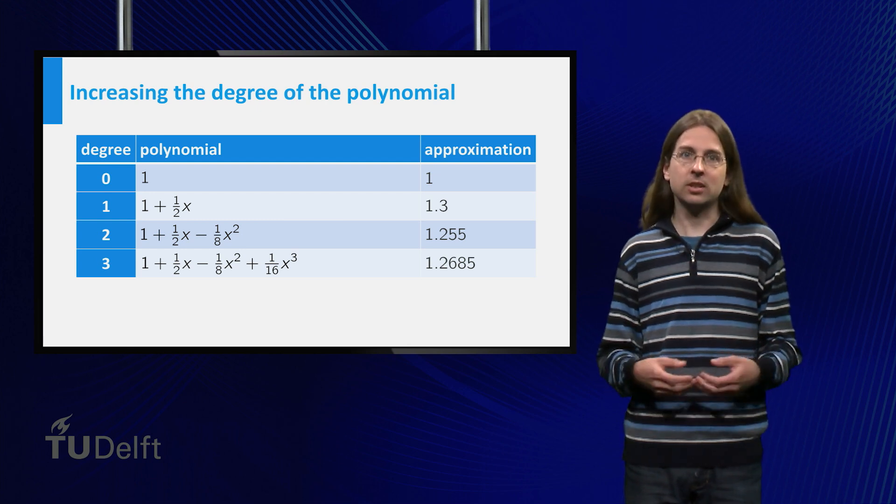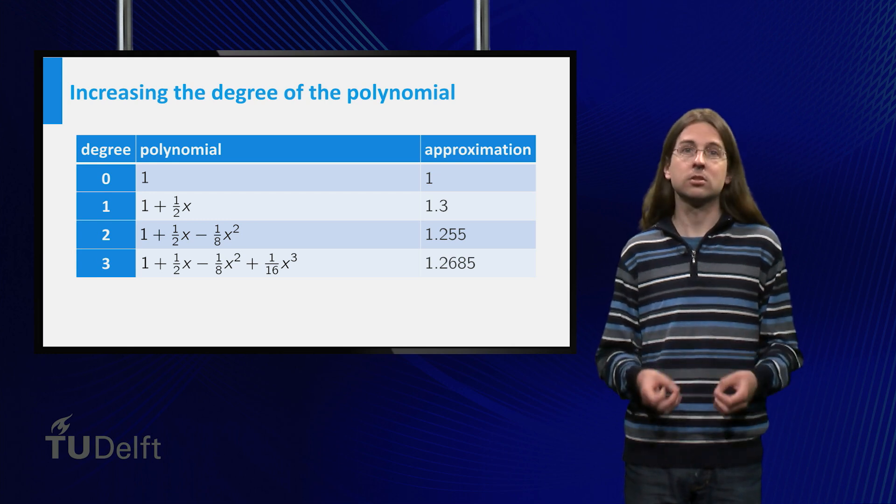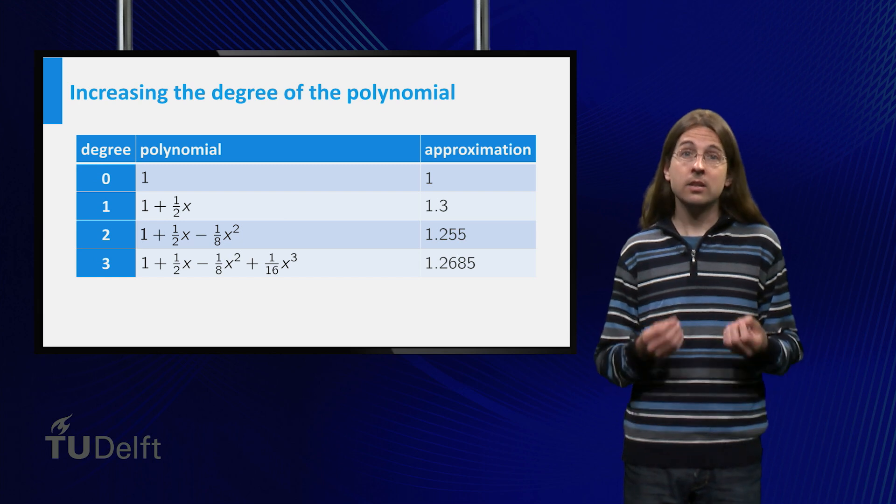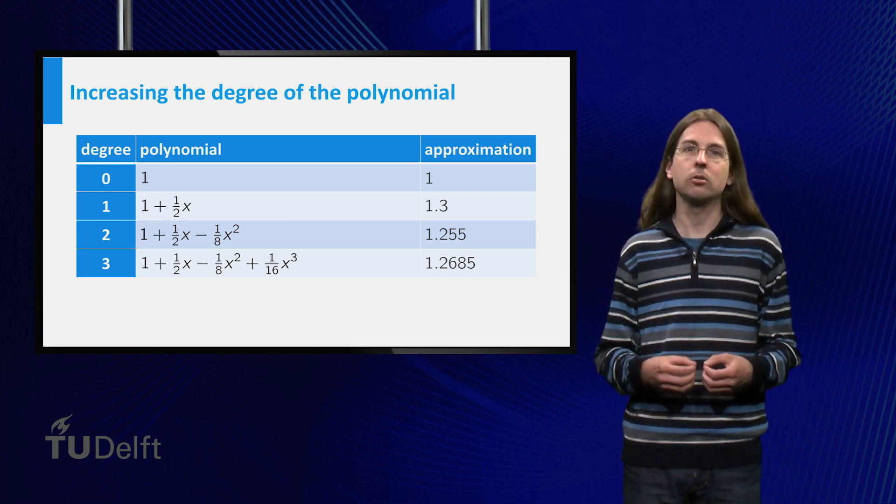The approximation of square root 1.6 becomes 1.2685. We made an adjustment of just 0.01, so we might be confident in our first two digits, 1.26. Indeed, in this case the approximation always improves if you use a higher degree polynomial.